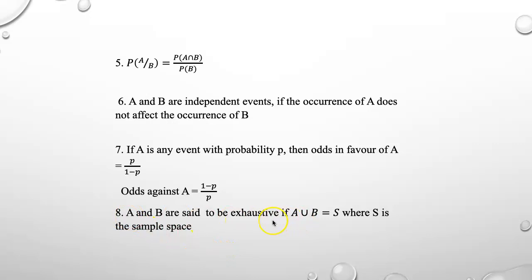A and B are said to be exhaustive events if A union B equal to S where S is the sample space. So A union B constitute the sample space.